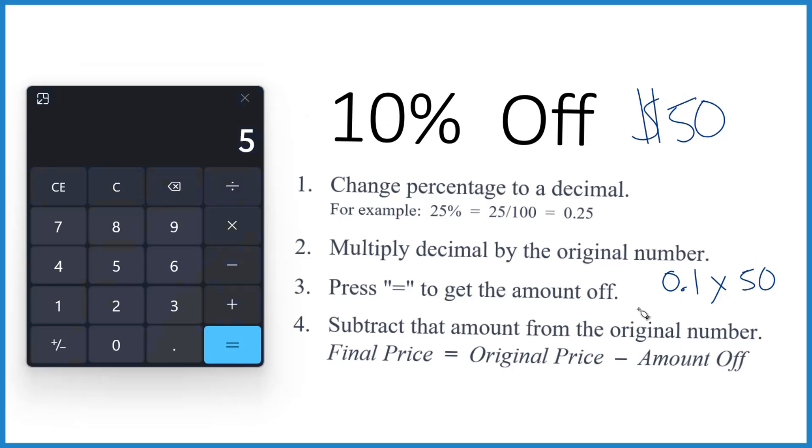And that $5, that's the amount off. So we just took 10% off $50, and we got $5 off. Then if we wanted that final price, how much we ended up paying,